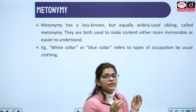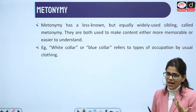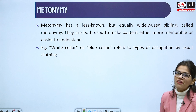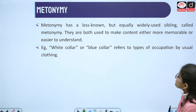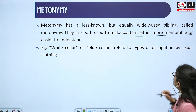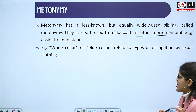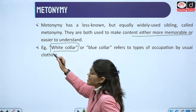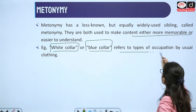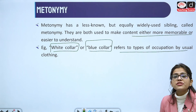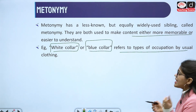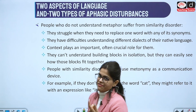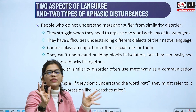Metonymy has lesser known value; we tend to use metaphor more. It is a widely known sibling of metaphor. They are both used to make content more memorable and easier to understand. When you completely replace something with another word, you call it metonymy. For example, 'white collar jobs' refers to higher-position jobs and 'blue collar jobs' refers to different kinds of occupations — here we are not talking about clothing, so we are completely substituting with other words. That is called metonymy.